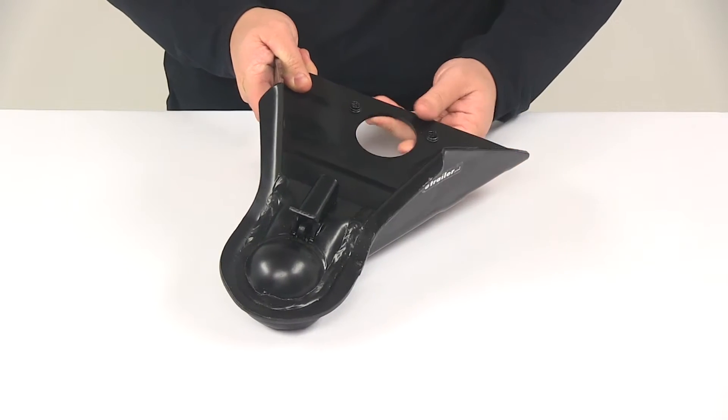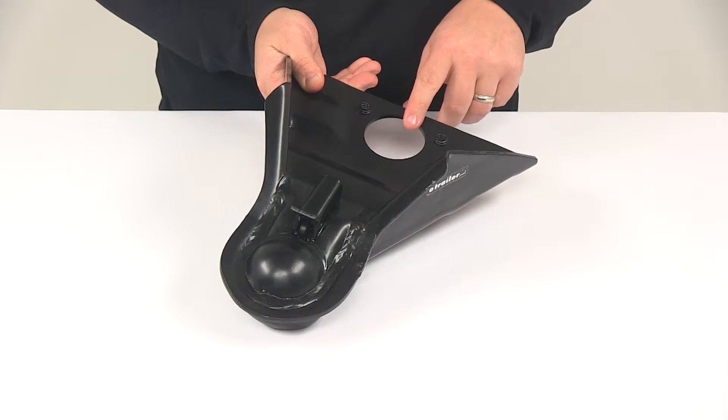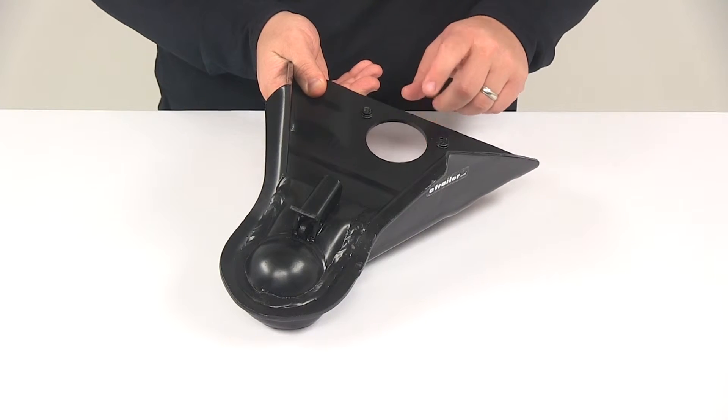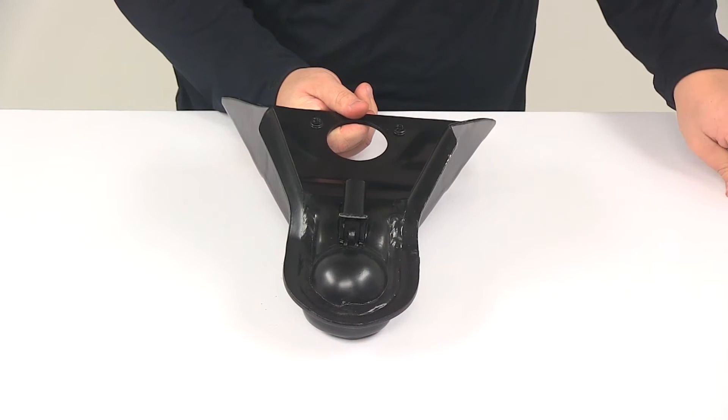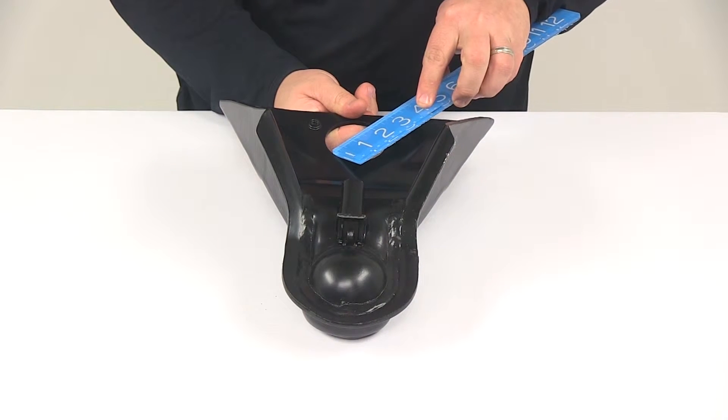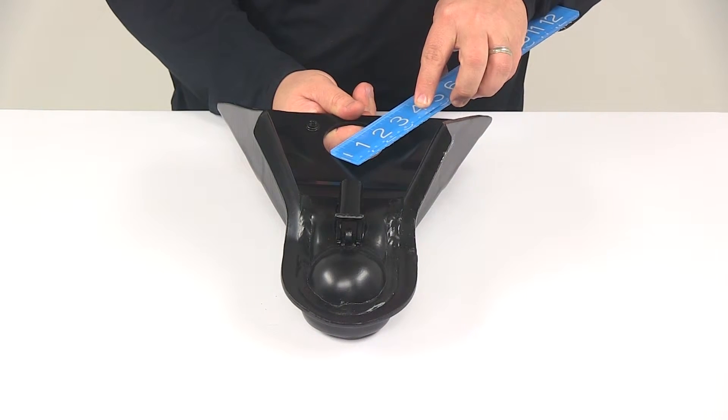Here at the back, it's got a built-in jack attachment point that allows for quick and easy mounting of a round utility jack. That jack hole diameter, let me take a measurement of that real quick. It measures two and one quarter of an inch.